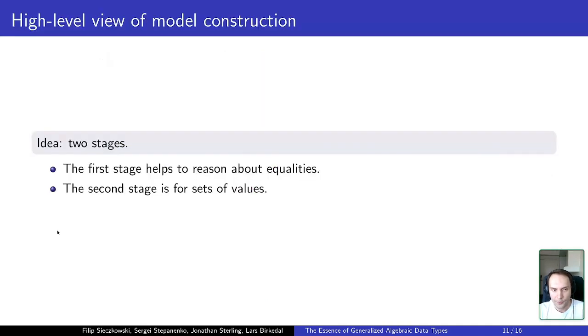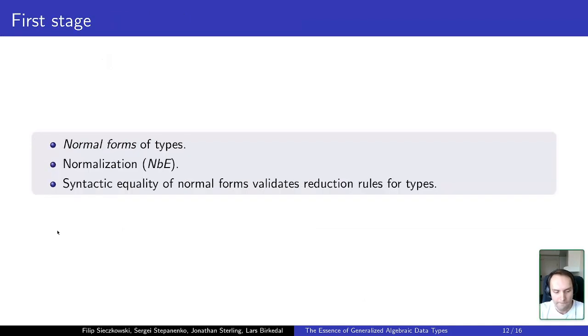So the idea of our model is to divide it into two stages. The first stage is used to reason about equalities, while the second stage is for usual interpretations of types as some special sets of values. So at the first stage, we define syntax of normal and neutral forms for types, apply NBE to it, and at the second stage, we reason only about normalized types at the ground level.